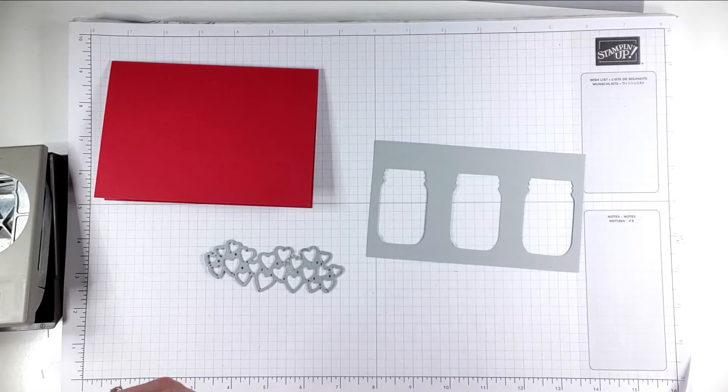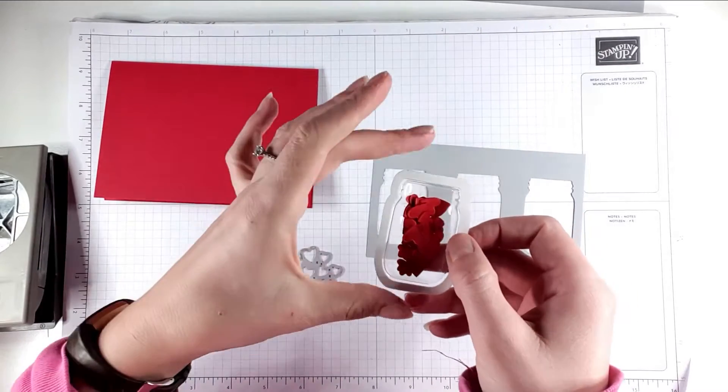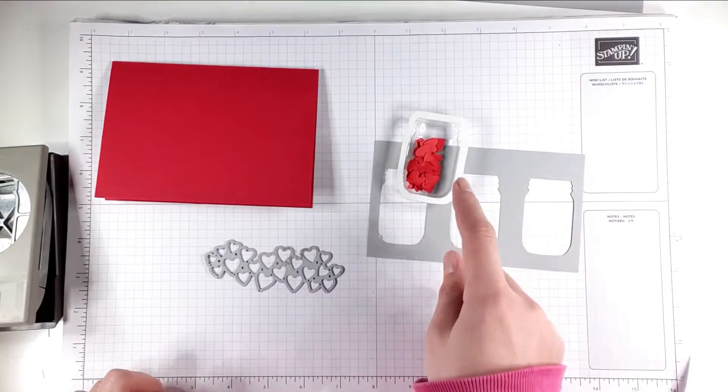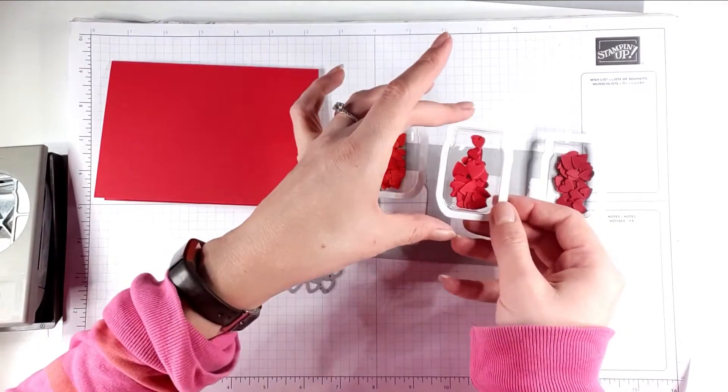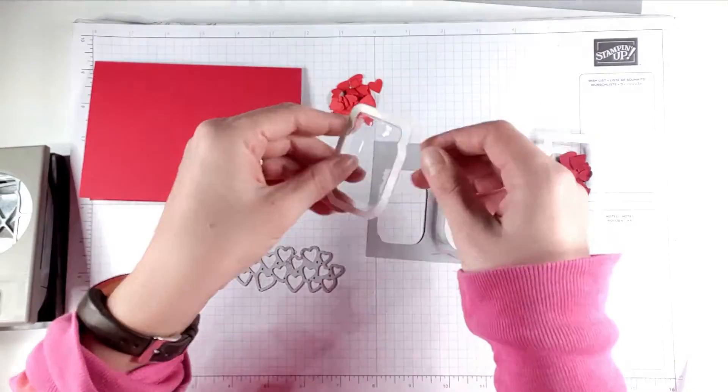So you can see that in these jars, these are the shaker domes that go with this punch. I've got all the Poppy Parade hearts there, all the Cherry Cobbler hearts here and all of the Real Red hearts there. So I'm going to put the hearts out into piles for a second.